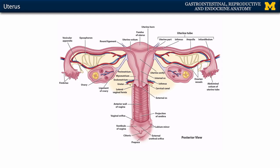Let's look at another image to talk about the internal and the external os. The internal os is the uterine cavity entering into the cervical canal — it's that entryway into that space. Whereas the external os is that cervical canal entering into the vagina. Clinicians will discuss those two different areas separately, so we make sure we understand those terms.